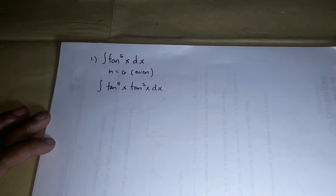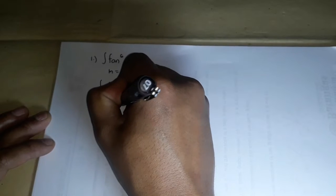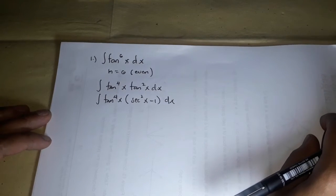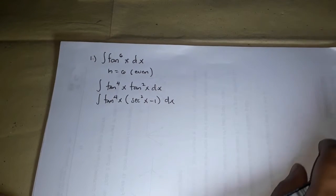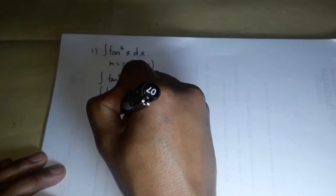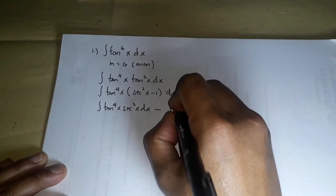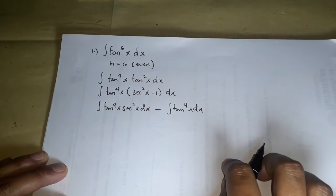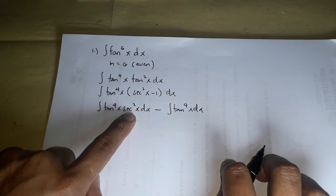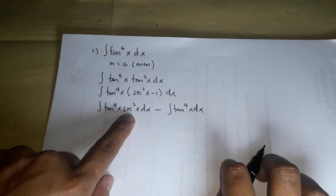That makes tangent to the 6th. Again, tangent squared x can be written as secant squared x minus 1 dx. Do not forget that the derivative of tangent x is secant squared x. So we introduce tangent to the 4x to each term inside the parenthesis, leading us with the integral of tangent to the 4x times secant squared x dx, minus the integral of tangent to the 4x dx. As you can notice, the first term has tangent to the 4x and secant squared x dx together, which is already integrable. We can let u equal tangent x, whose derivative is secant squared x dx.